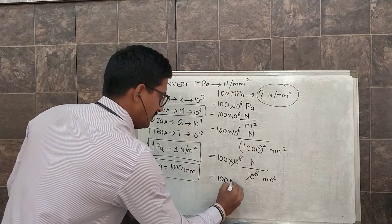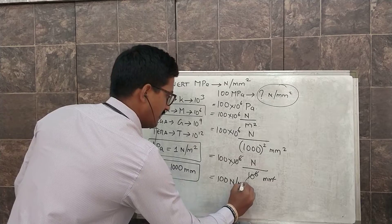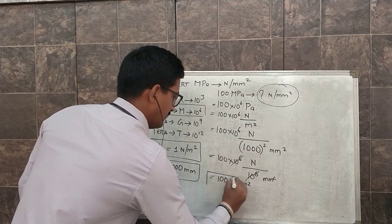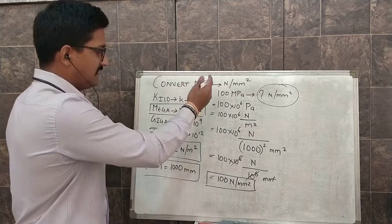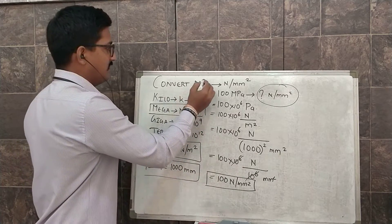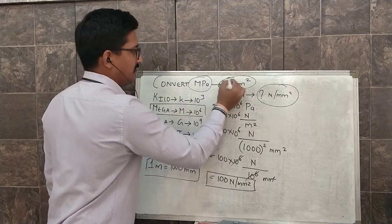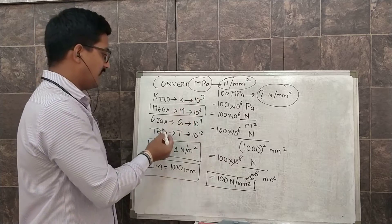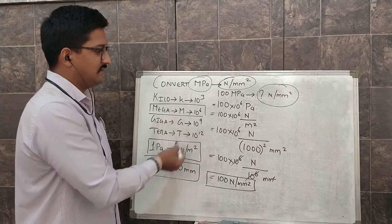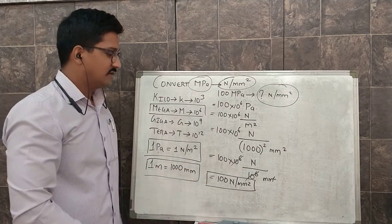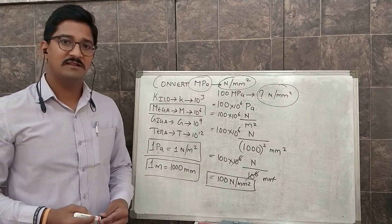100 Newton per m². So in this way we can convert megapascal into Newton per m². If you want to convert any of this hierarchy system we can approach like this. So hope you liked today's lecture, thank you.